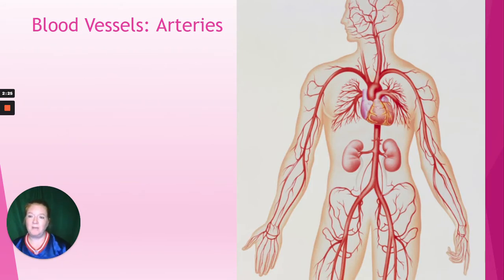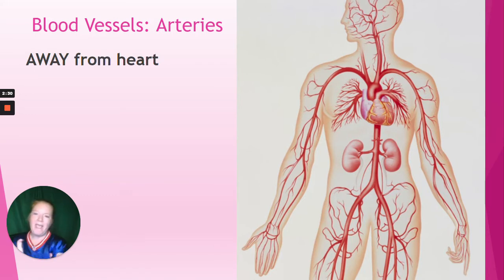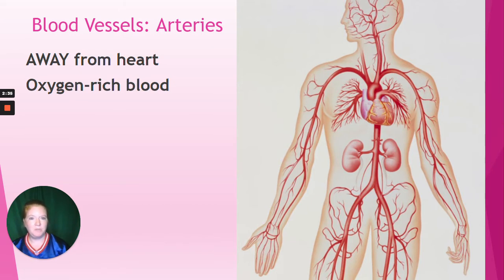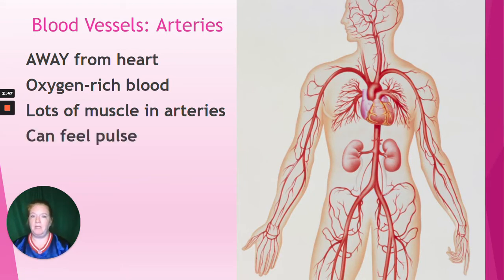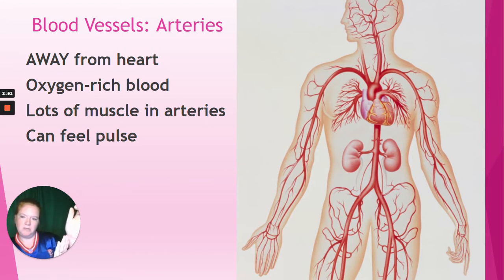Let's talk about blood vessels. First type: arteries. A trick - arteries go away from the heart. They carry typically oxygen-rich blood, with one exception. There's lots of muscle in arteries - they squeeze and pump to help move the blood through the body. That's why you can feel a pulse. If you put your fingers on your wrist or on your neck, you'll be able to feel your pulse.